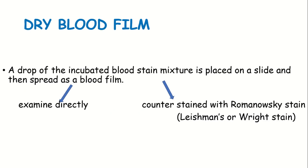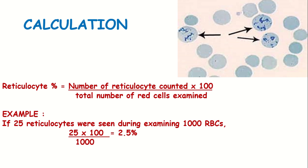We prepare the incubated blood-stain mixture, place it on a slide, and make a blood smear - already stained with BCB and dried. Then we examine and demonstrate the RBCs. The reticulocyte percentage is equal to number of reticulocytes counted into 100, divided by total number of red cells examined.